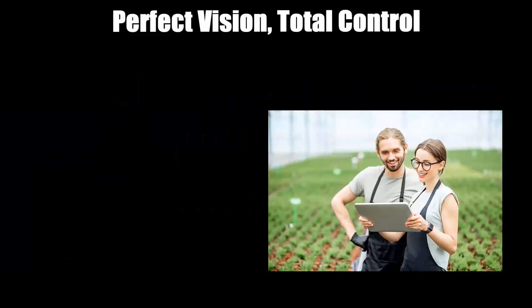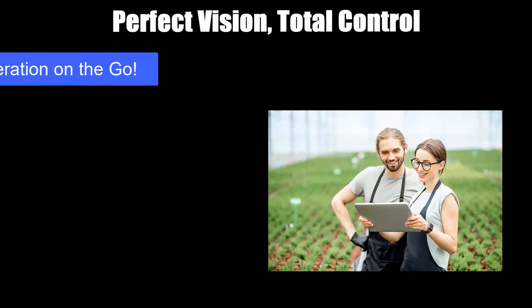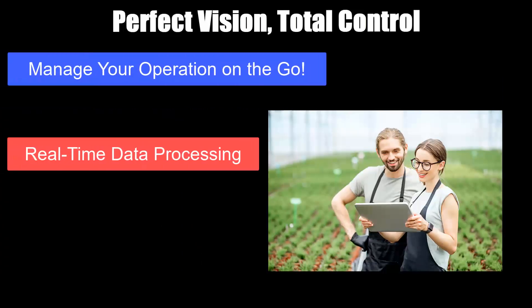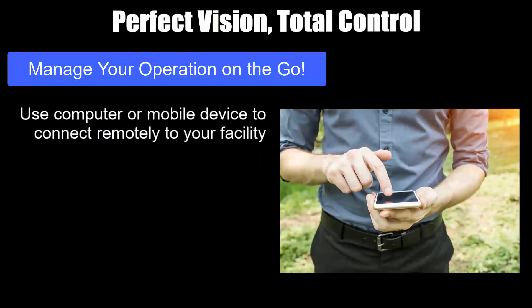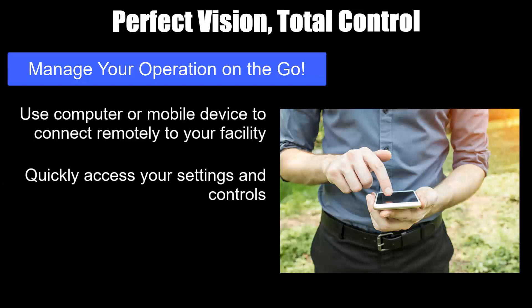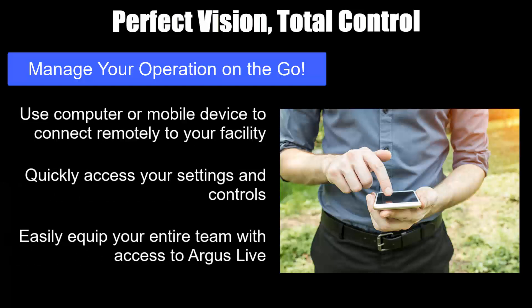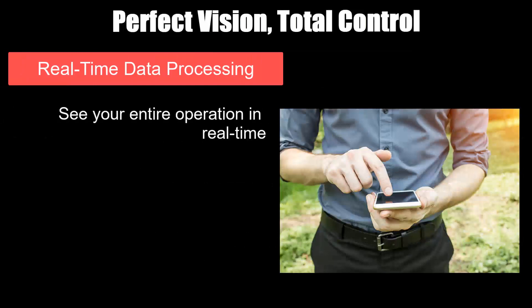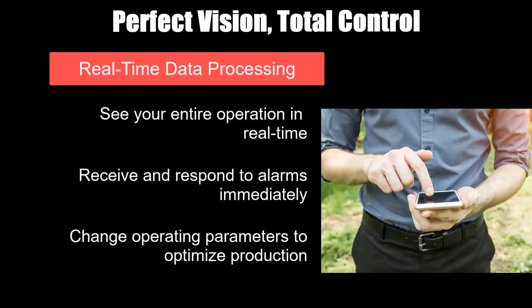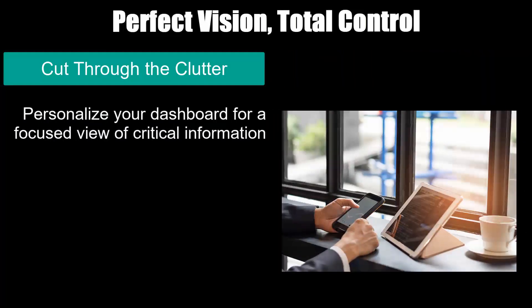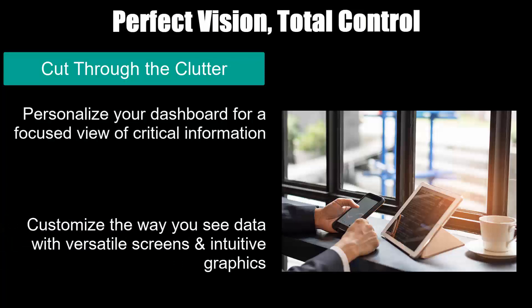Attributes. These are the main attributes of the new Argus Live web application: manage your operation on the go, real-time data processing for faster decision making, cut through the clutter, use your computer or mobile device to connect remotely to your facility, quickly access your settings and controls, easily equip your entire team with access to Argus Live, see your entire operation in real time, receive and respond to alarms immediately, change operating parameters to optimize production, personalize your dashboard for a focused view of critical information, and customize the way you see data with versatile screens and intuitive graphics. Please note that some non-scalable screens are not configurable at this time and are displayed as you'd see them in your Argus software.